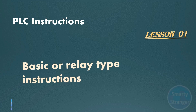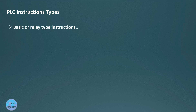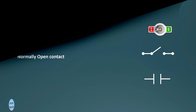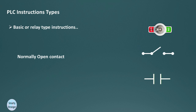Basic or relay-type instructions: PLCs perform boolean logic using basic relay instructions. The three most commonly used basic or relay instructions are normally open contact, normally closed contact, and relay coil. A normally open contact is like an open switch — when its corresponding physical input is energized or high, the normally open contact becomes a closed contact.